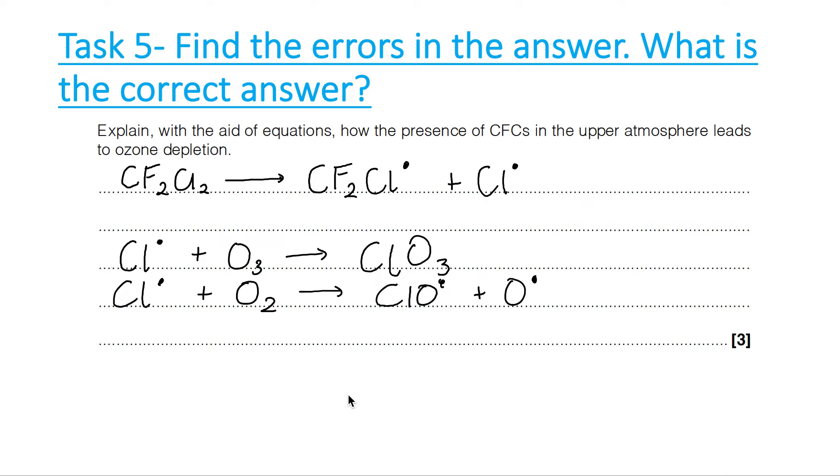The last question: find the error. Essentially, you need to know the correct answer. With the aid of equations, explain how the presence of CFCs can lead to ozone depletion. You need to write the steps for CFCs to form radicals and those radicals reacting with ozone to break it down. I've gone for CF2Cl2. The initiation step: under UV, the carbon-chlorine bond breaks to form this radical and a chlorine radical. That's correct. We've shown one of the bonds between carbon and chlorine breaking to form two radicals, and that is the initiation step.